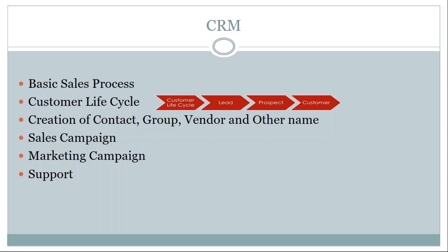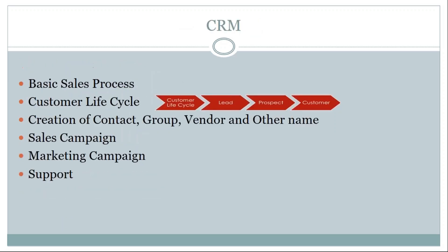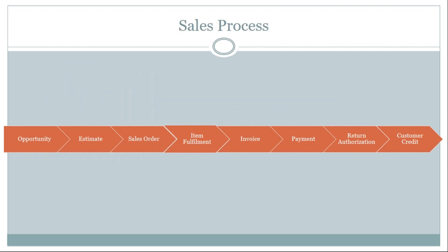CRM also handles sales campaigning and marketing campaigns. Sales campaigning involves sending bulk emails to customers to increase sales. Marketing is slightly different — it involves selling goods to retailers or wholesalers, which is called marketing.